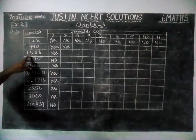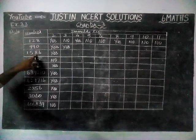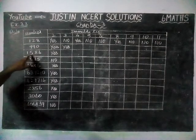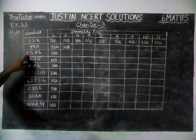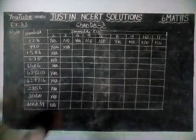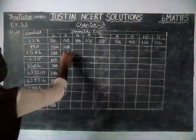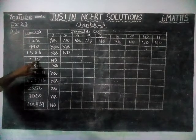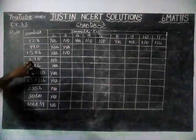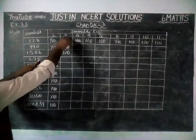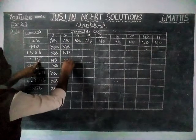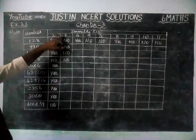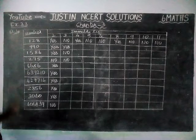Next number: 6 plus 8 is 14, 14 plus 5 is 19, 19 plus 1 is 20. This 20 is not divisible by 3, so this number is not divisible by 3 — no. And next, 5 plus 7 is 12, 12 plus 2 is 14. 14 is not divisible by 3, therefore this number is not divisible by 3. If sum of its digits is divisible by 3, then that number is divisible by 3; otherwise, it is not.